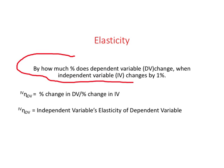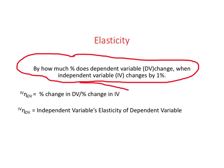Elasticity is defined as: by how much percent does the dependent variable change when the independent variable changes by 1%? Or we could write this as a ratio — it is just the ratio of percent change in dependent variable divided by percent change in independent variable.